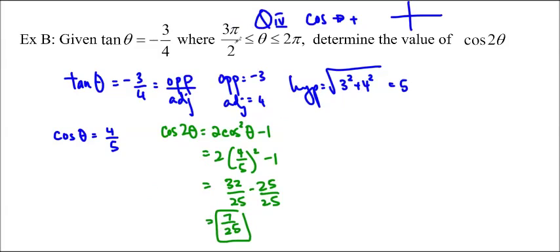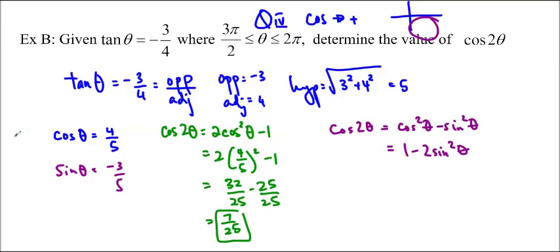So the way I did it was I noticed that 3 pi over 2 is less than or equal to theta is less than or equal to 2 pi means that it's in quadrant 4. So that tells us that cos is positive, and the adjacent is 4, and the opposite is negative 3. The hypotenuse using the Pythagorean theorem is 5, so we have cos theta equals 4 over 5. Then I just use my formula. You could also find that sine theta is equal to negative 3 over 5, and then use the other formulas. Either way, you should get 7 over 25.